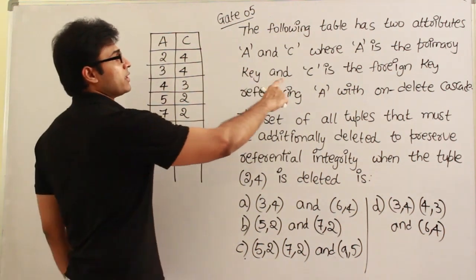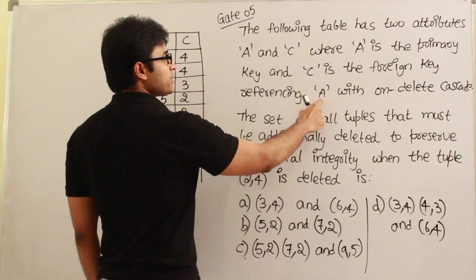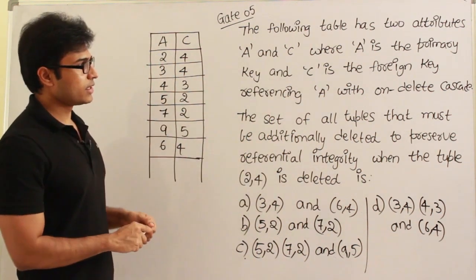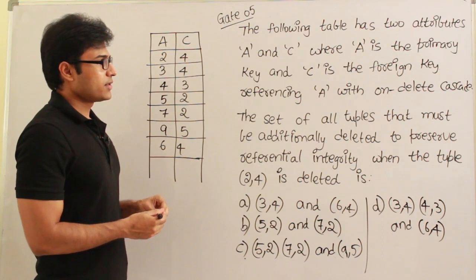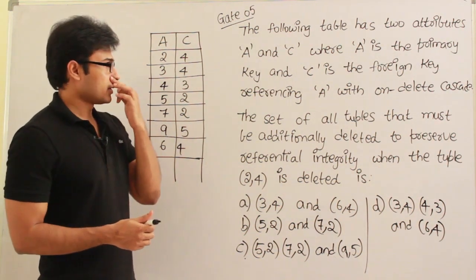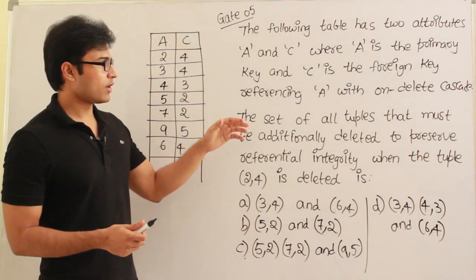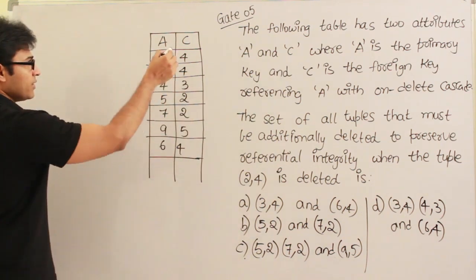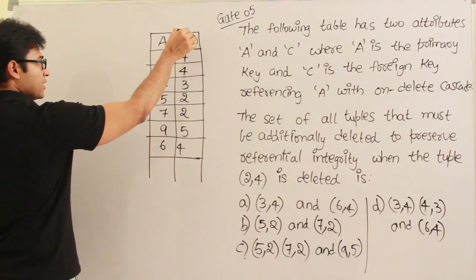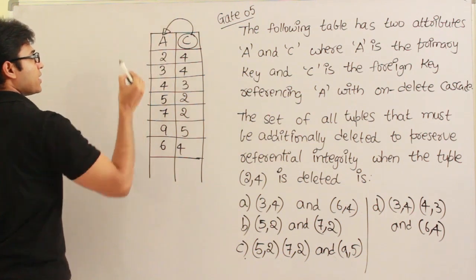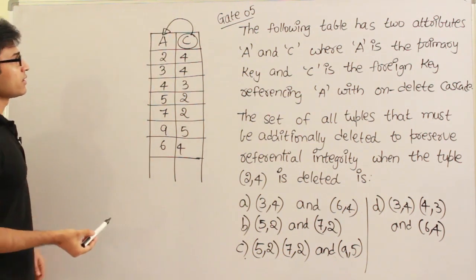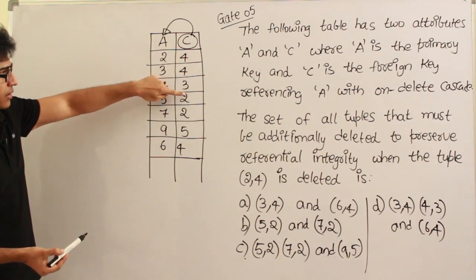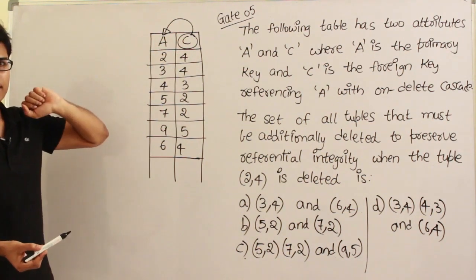A is the primary key and C is the foreign key referencing A with on delete cascade. C is the foreign key referencing A, which means this attribute C is going to refer to A. Any value which is present in C should definitely be present in A.